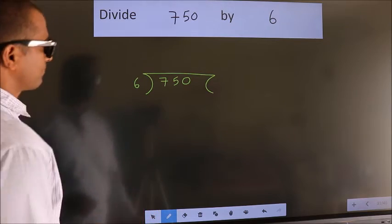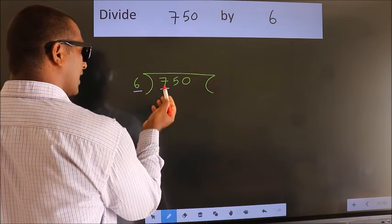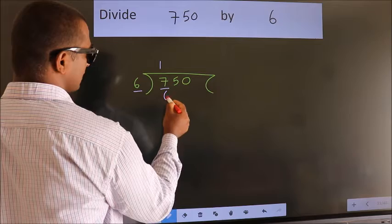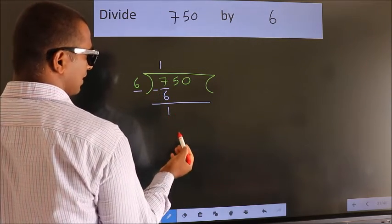Next, here we have 7, here 6. A number close to 7 in the 6 table is 6 ones, 6. Now we should subtract. We get 1.